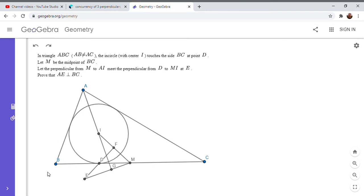So we have a triangle ABC with incenter I. And the incircle is tangent to side BC at point D. Let M be the midpoint of BC. And now we take the perpendicular from M to the line AI. And we let it intersect the perpendicular from D to the line MI at point E.